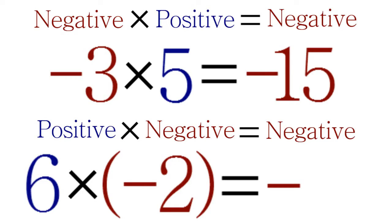And again, to find the value of the answer, multiply 6 × 2 = 12. So 6 × (-2) = -12.